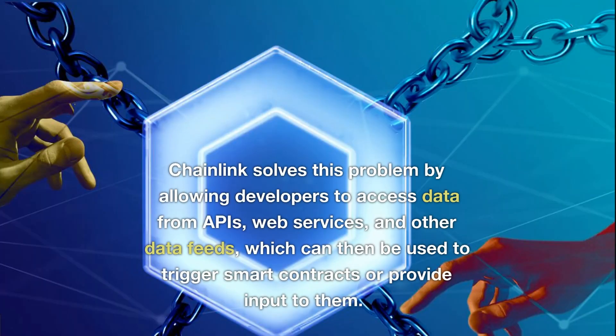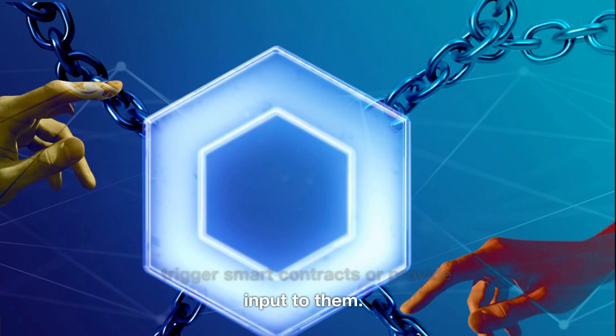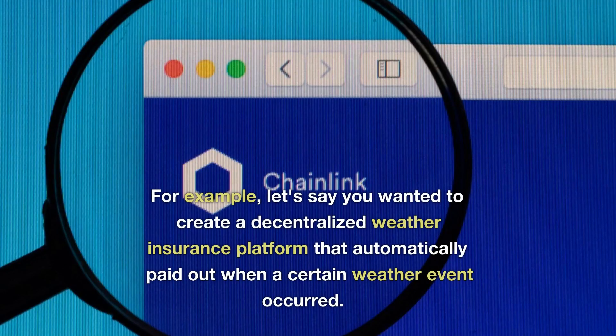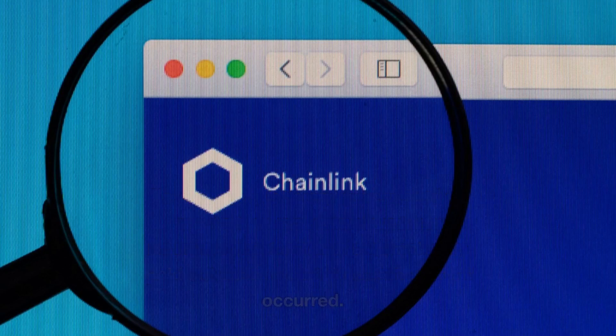This made it difficult to create complex applications that relied on real-time data or data from external sources. Chainlink solves this problem by allowing developers to access data from APIs, web services, and other data feeds, which can then be used to trigger smart contracts or provide input to them. For example, let's say you wanted to create a decentralized weather insurance platform that automatically paid out when a certain weather event occurred.